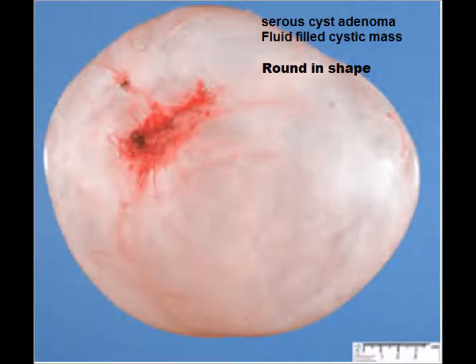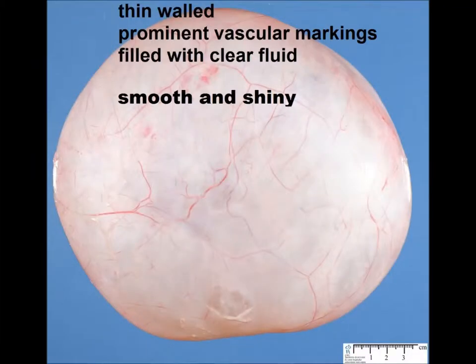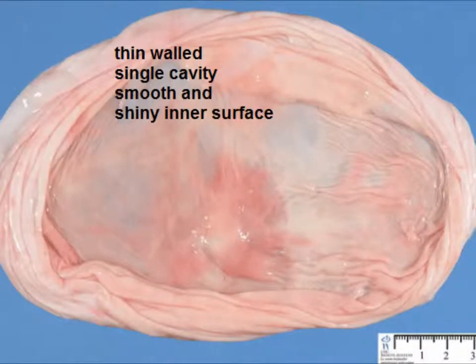This is the serous cyst adenoma: a fluid-filled cystic mass, round in shape. Its outer surface is smooth and shiny with prominent vascular markings. The cut section shows it is thin-walled with a single cavity — unilocular — and the inner surface is also smooth and shiny.